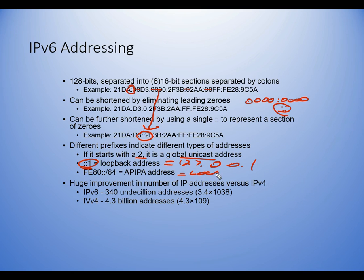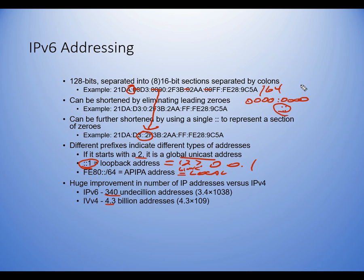The loopback address in IPv6 is ::1, equivalent to 127.0.0.1 in IPv4. Addresses starting with FE80 are link-local addresses, similar to APIPA. IPv6 has 340 undecillion addresses — 3.4 times 10 to the 38th power — compared to IPv4's 4.3 billion (4.3 times 10 to the 9th). CIDR notation is used for IPv6, so /64 means the first 64 bits are the network address — the practical way to write these rather than strings of FFs.